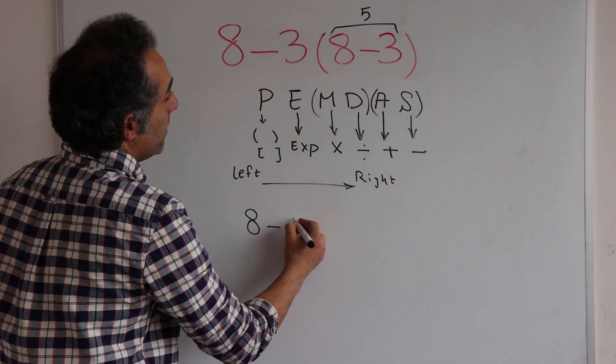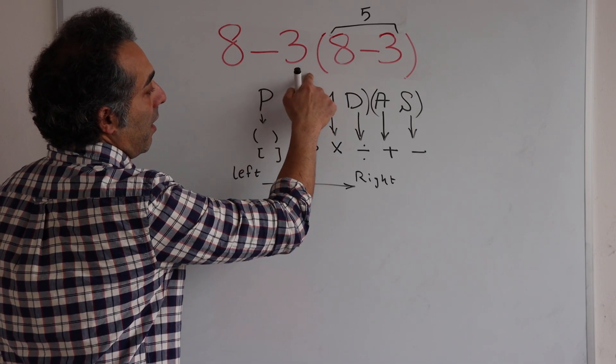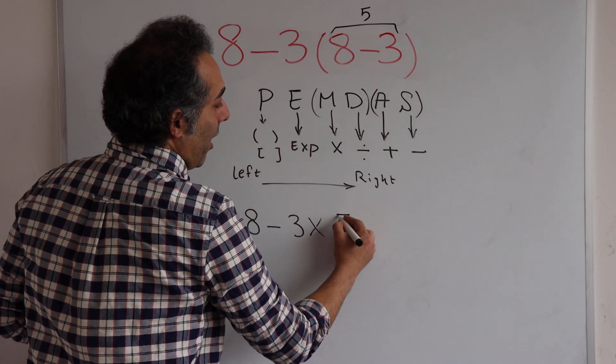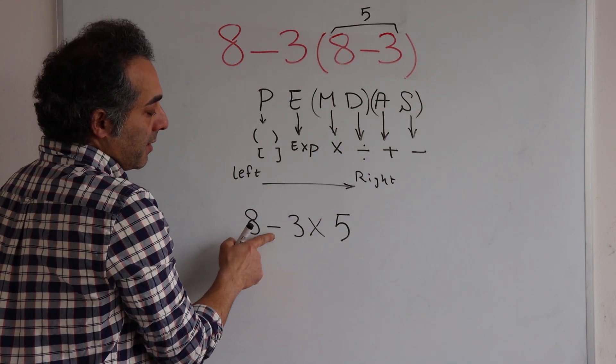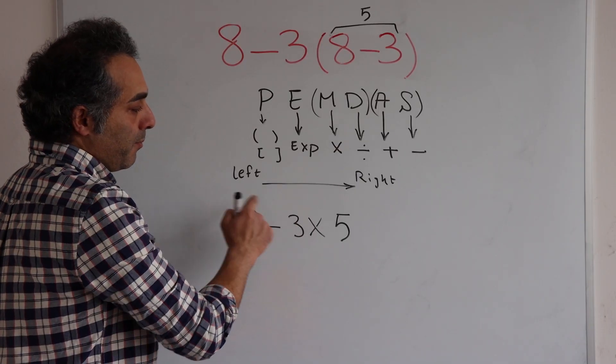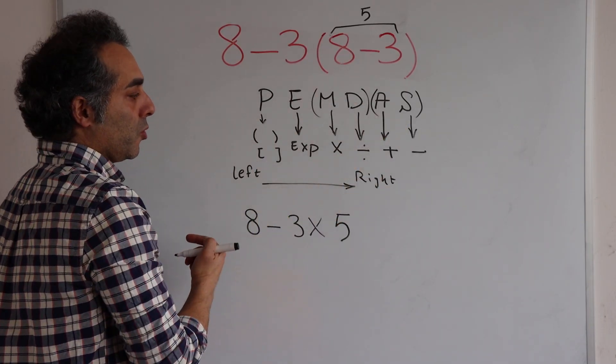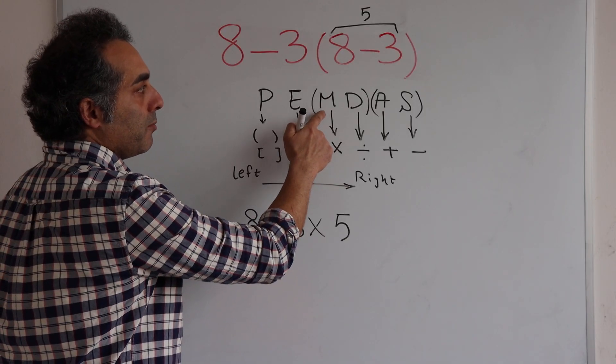8 minus 3, between these is multiplication, and now we have 5 here. You can see a subtraction here and multiplication here, and based on this PEMDAS rule you should first do this multiplication.